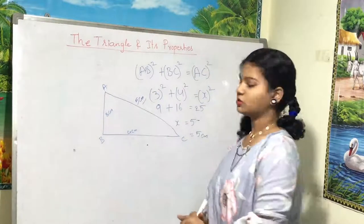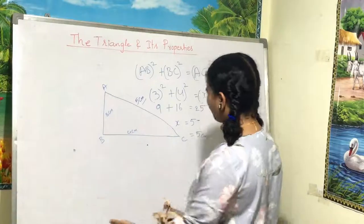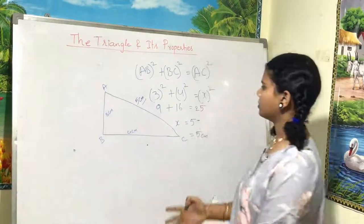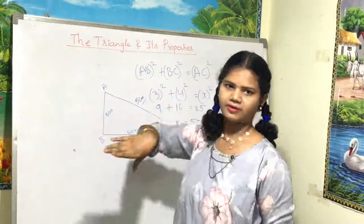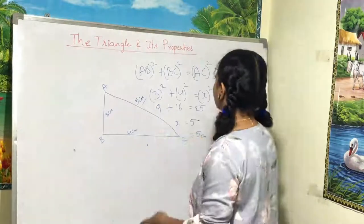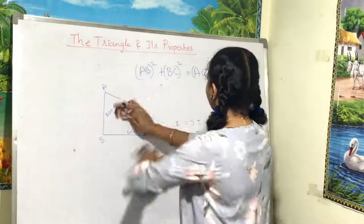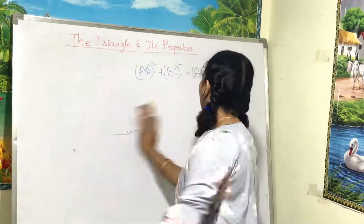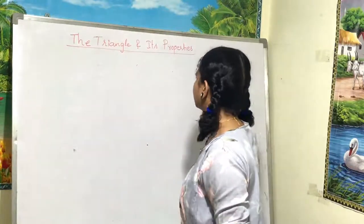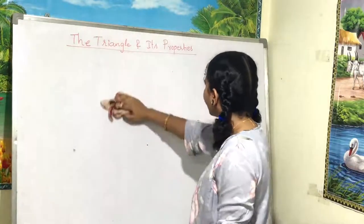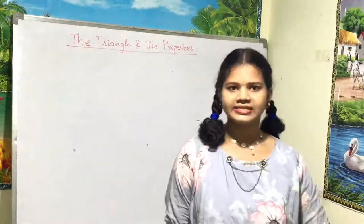This is how we can use the Pythagorean Theorem, and this formula is the main one we must remember. I hope you all understood today's lesson on the triangle and its properties. I'll be back with a new lesson as soon as possible. Till then, take care, bye bye!